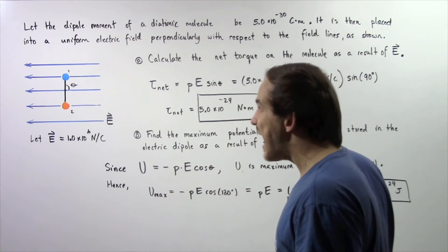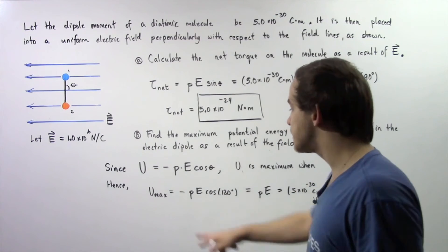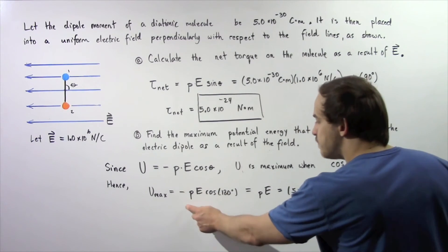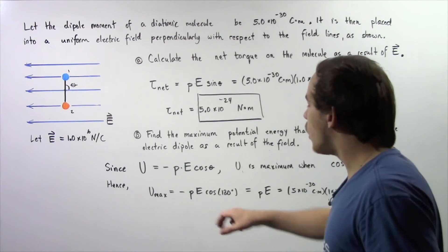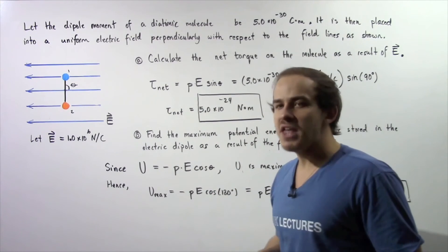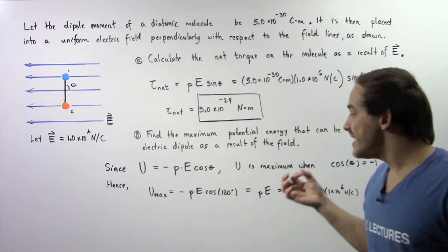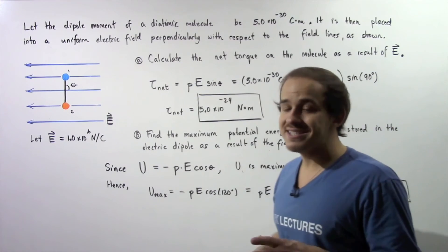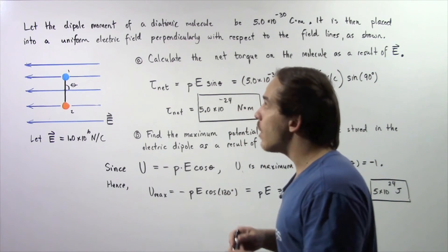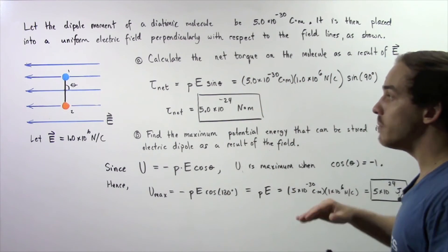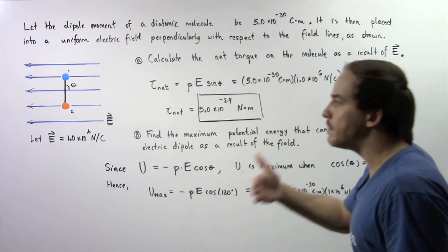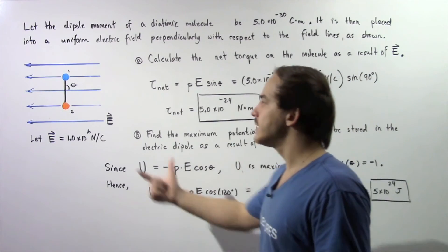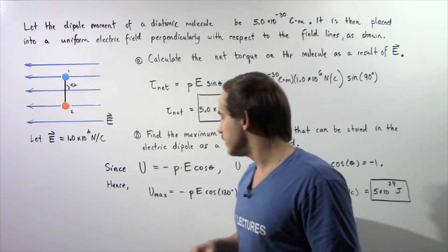So that means the potential energy maximum is equal to negative P multiplied by E multiplied by cosine of the angle 180. So an angle of 180 degrees simply means that our electric dipole moment vector is anti-parallel with respect to our electric field.